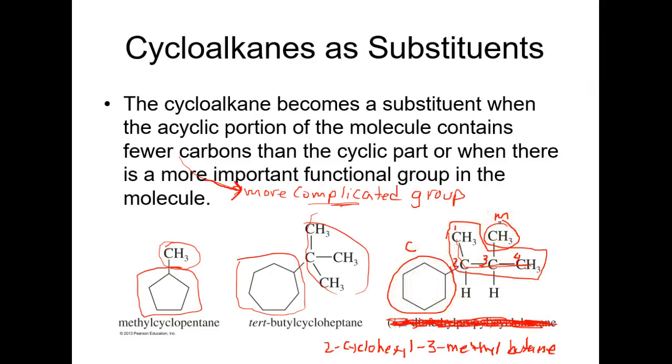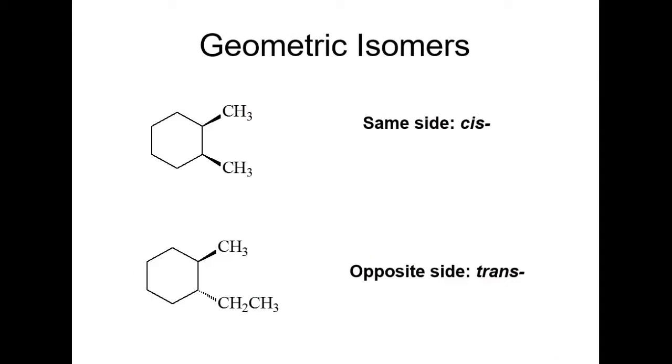When the group. If you want to read this. A cycloalkane becomes a substituent when the acyclical portion of the molecule is a more complicated group than the cyclical part. And when there is a more important functional group in the molecule. See if this makes sense. Otherwise, we'll talk about it in class.